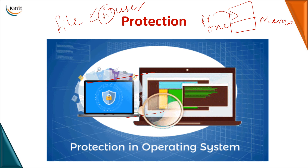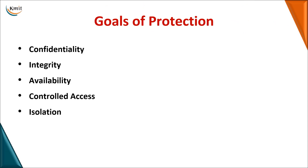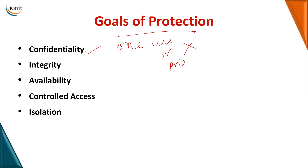All of these come under the protection of an operating system, and this is one of the services to be provided by the OS. Now, what are the goals of protection? The first is confidentiality — the data should be very secure, and one particular user or program should not access the data of another user or program.